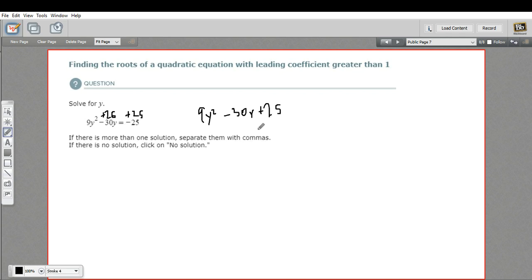Now, when we factor this, we're going to have two factors, and the first term, the y term, is going to have a coefficient with factors of 9, so either 1 and 9 or 3 and 3, and the last term is going to have factors of 25, and they're both going to be negative because this number is positive, but we have a negative number in the middle. The only way that happens is when both those second terms in the binomials are negative.